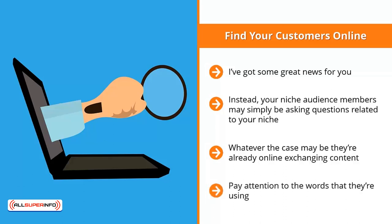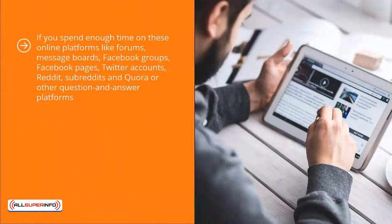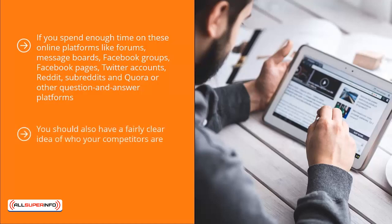Pay attention to the words that they are using and the solutions that they are already talking about. Understand the shortcomings of the solutions people are already aware of. If you spend enough time on online platforms like forums, message boards, Facebook groups, Facebook pages, Twitter accounts, Reddit, subreddits, Quora, and other question-and-answer platforms, you should have a clear understanding of who your audience members are and their expectations.